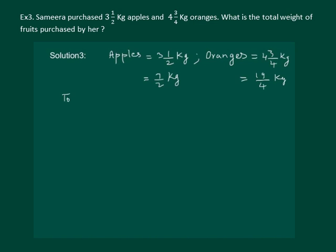Now to find the total fruits is equal to 7 by 2 kg plus 19 by 4 kg. But the 2 fractions are not like, so let us convert them into like fractions. We know that LCM of 2 and 4 is 4. So let us convert 7 by 2 such that the denominator is 4.